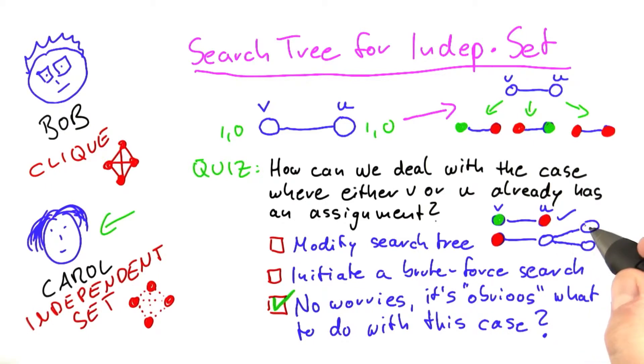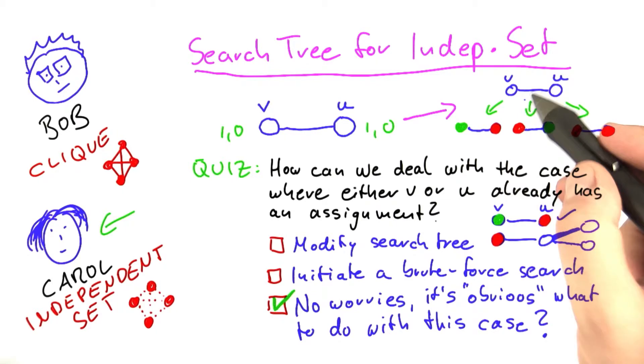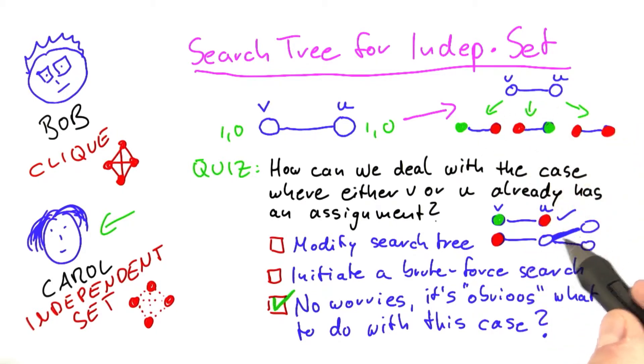So now there's two different cases. One is that one of these vertices here has not yet received an assignment. And in that case, we don't have to worry about modifying the search tree because now we're looking at a case like this here again. So we can use our standard search tree to search through assignments for these two vertices here.